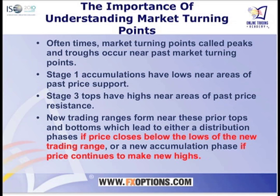New trading ranges tend to form near these prior tops and bottoms, which could either lead to a distribution phase if price closes below the lows of the trading range — and this is the really important part. I don't have a good track record of predicting that, but I can react. If price closes below this new trading range after a big move up, I can say this can be a brand new stage 4 decline phase, and I need to switch from buying pullbacks in an uptrend to shorting rallies in a downtrend. However, if price breaks out through the top of that trading range and goes on to make new highs, that is what we call a higher accumulation phase followed by a new leg up.